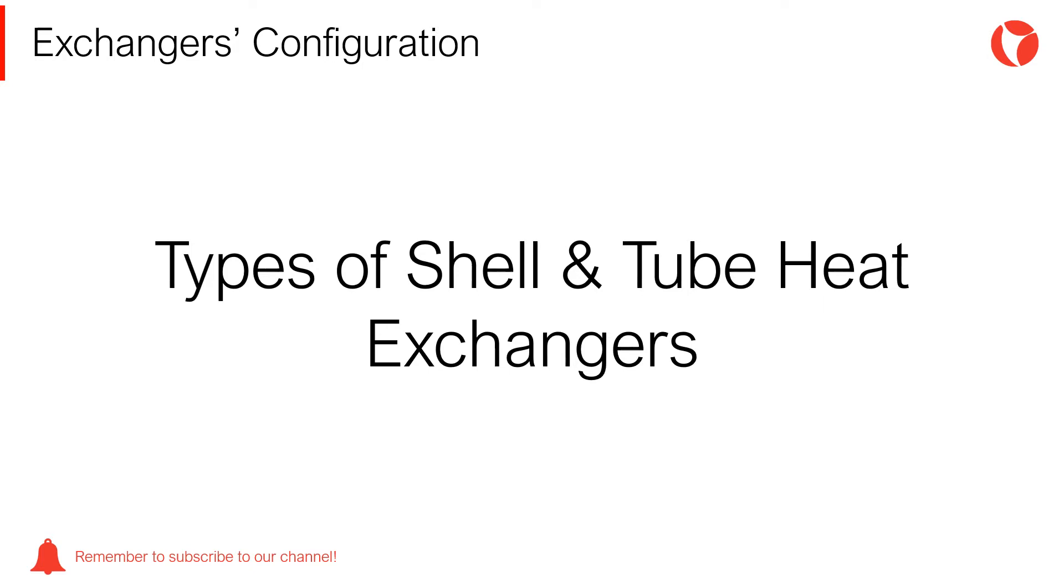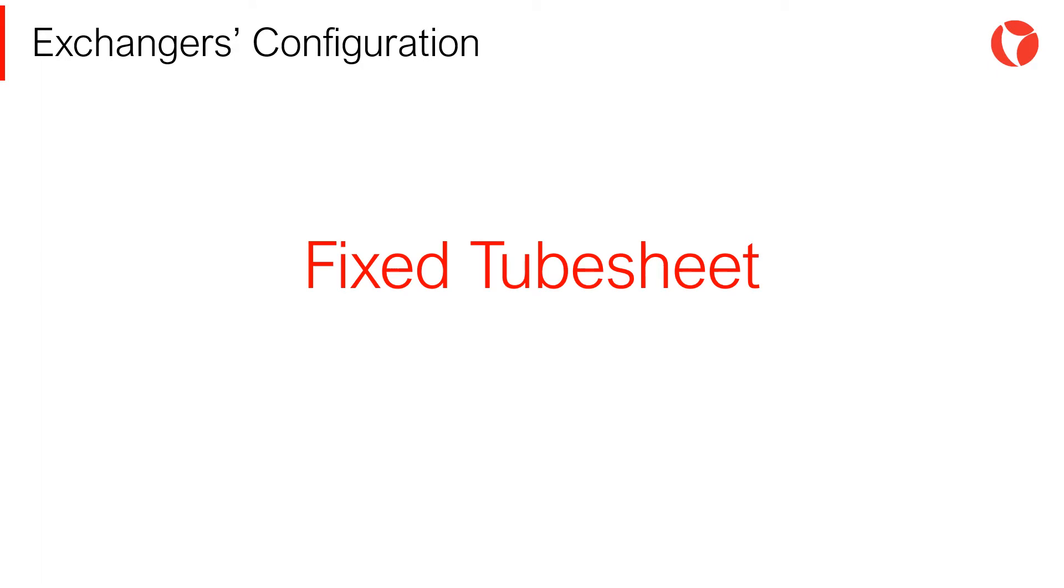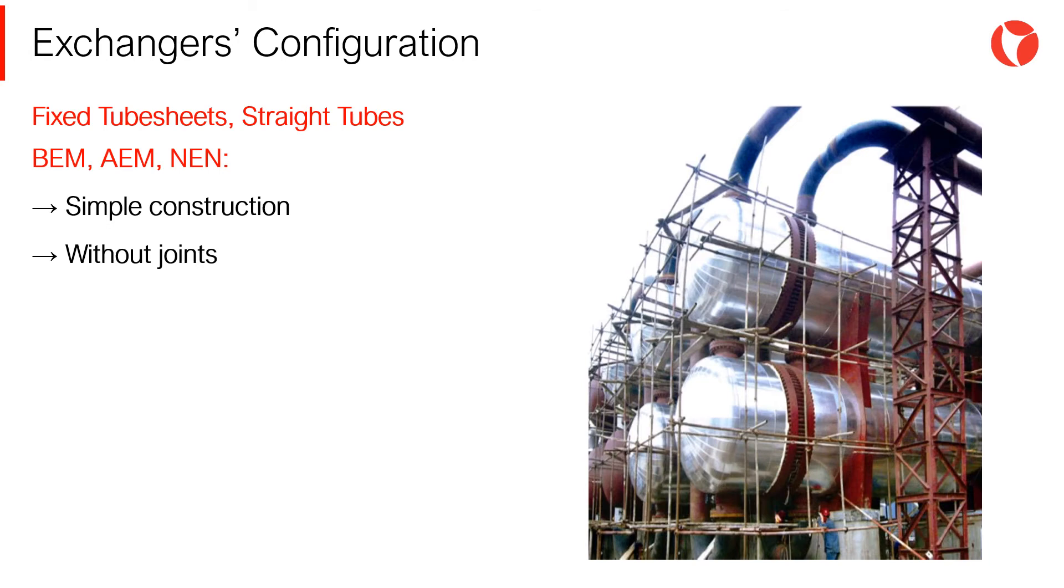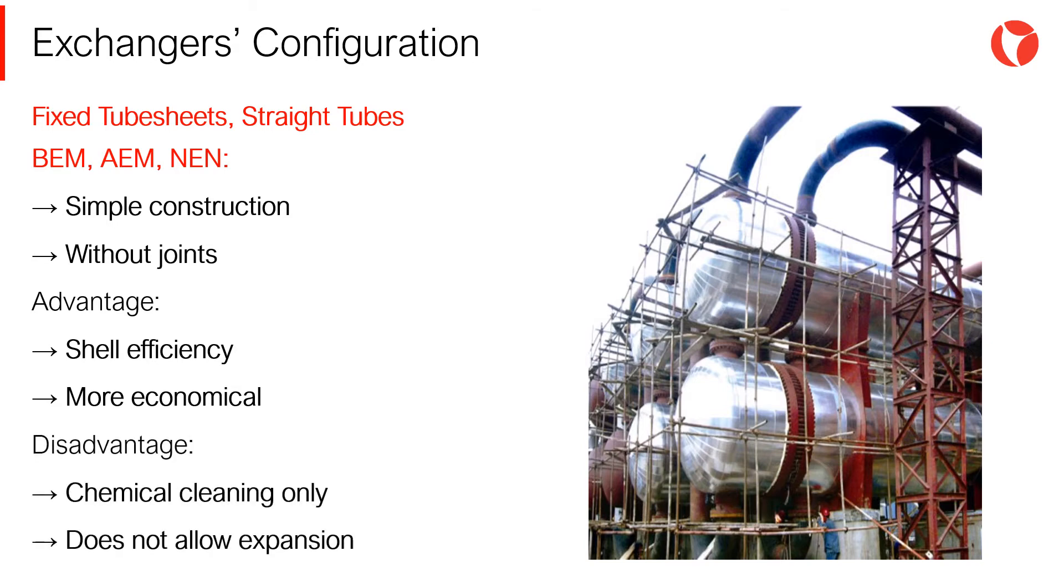Shell and tube heat exchangers are divided into three large groups. Fixed tube sheet exchangers have two tube sheets at both ends of the tube bundle. This type is the most economical of all three types, for the same pressure and temperature. The advantages of this type are shell efficiency and economical fabrication. On the other hand, the disadvantage is that only chemical cleaning can be performed on the shell and this type does not allow thermal expansion.